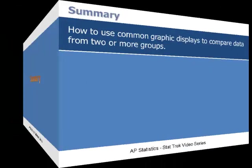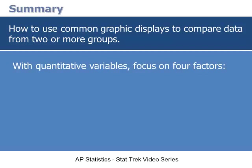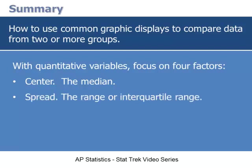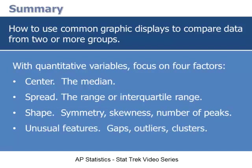Let's review. In this lesson, you learned how to use charts and graphs to compare data from two or more groups. An important takeaway is to focus on four factors when comparing quantitative variables: look at the center of each dataset, represented by the median; compare the spread as measured by the range or interquartile range; note the shape of each dataset — is it symmetric, skewed, or does it have one or more peaks? Also look for unusual features like gaps, outliers, or clusters.